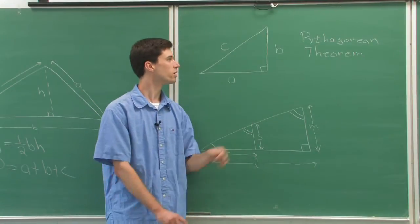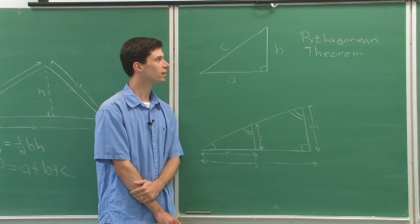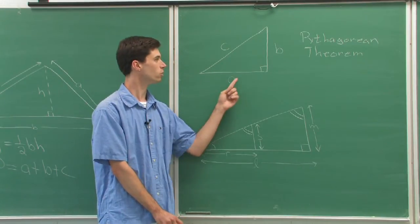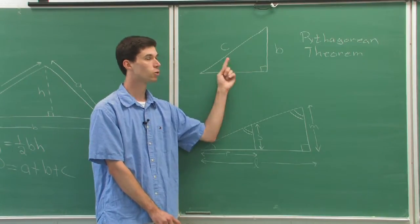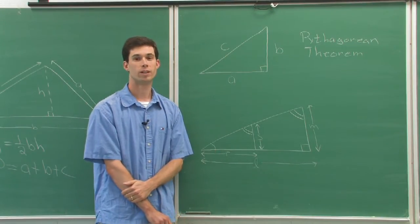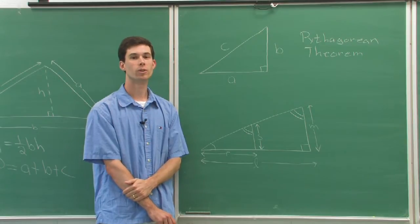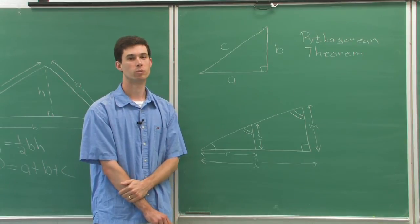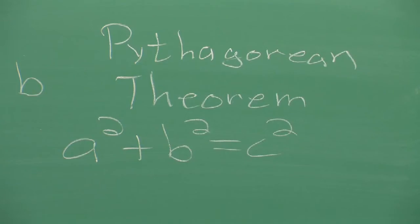The Pythagorean theorem tells you exactly when the sides of a triangle give you a right triangle, and that is when A squared plus B squared equals C squared.